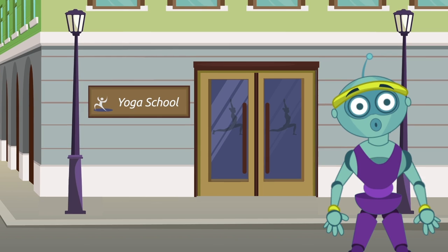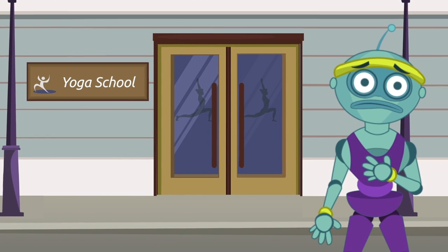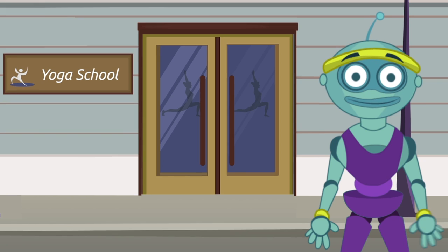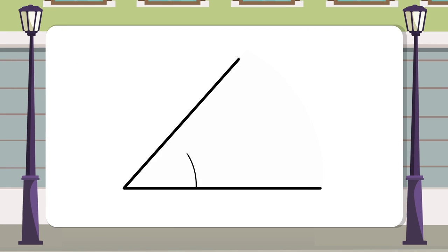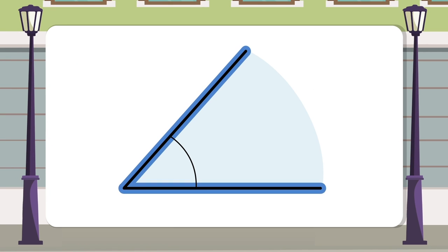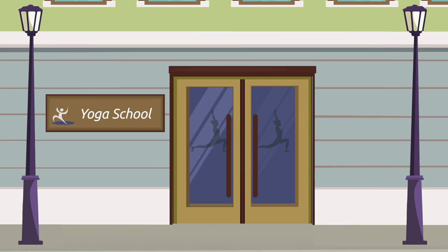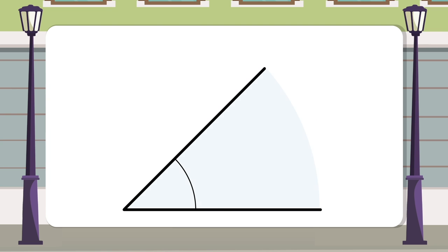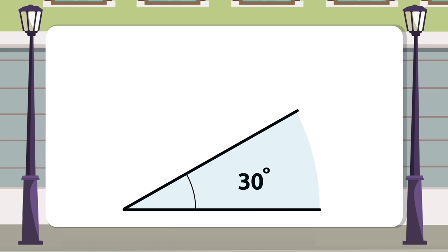Have you seen how many angles I can bend my body into? Even though today is not my day, let's recap what we've learned. An angle is the space between two straight lines that we call segments, and the point where both lines meet is called the vertex. To classify angles we measure their opening — this is measured in degrees.